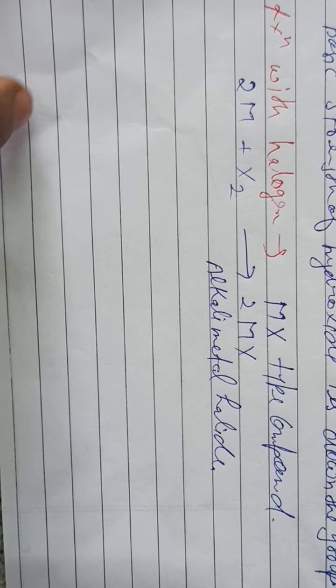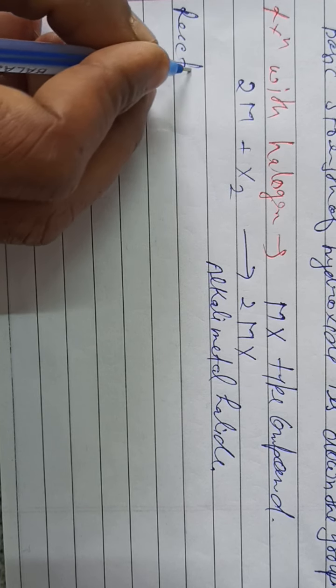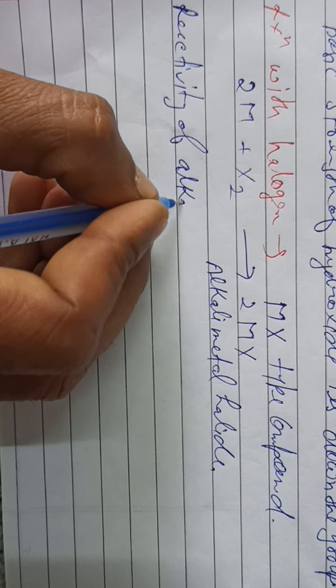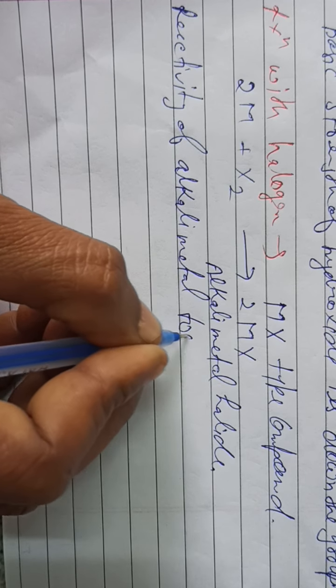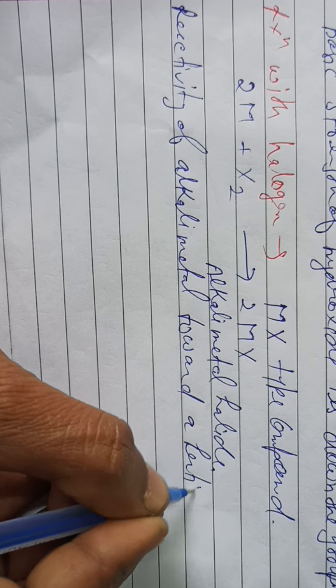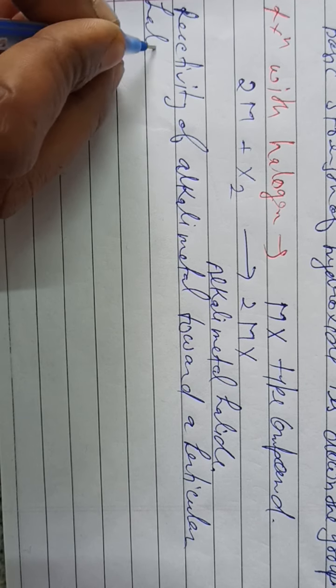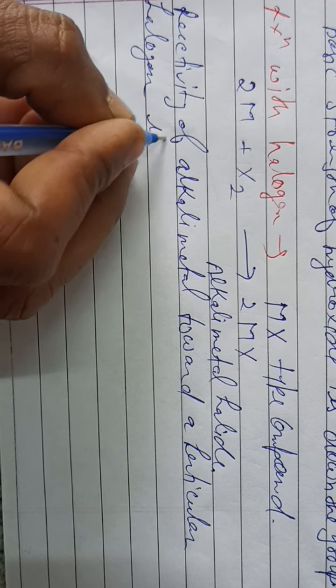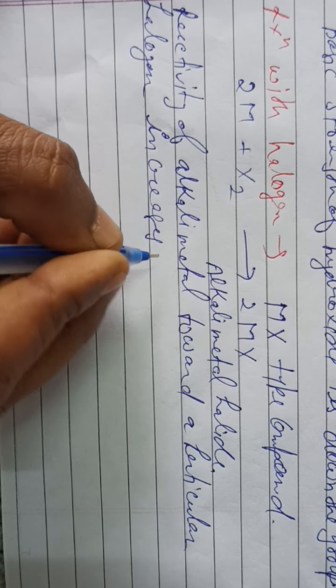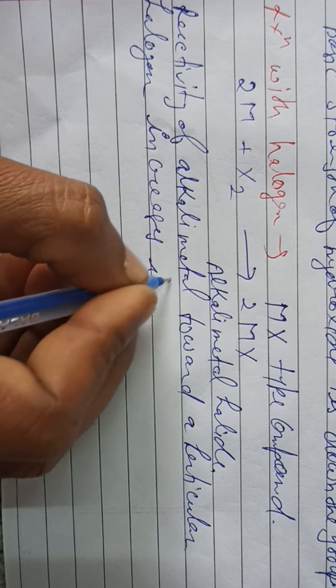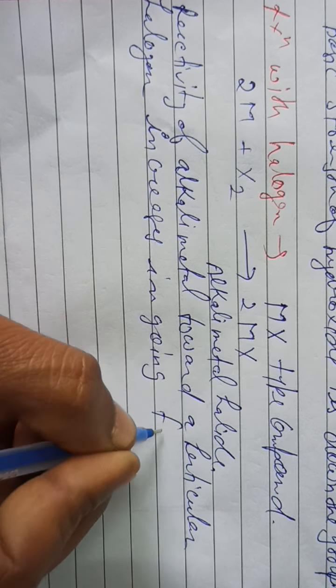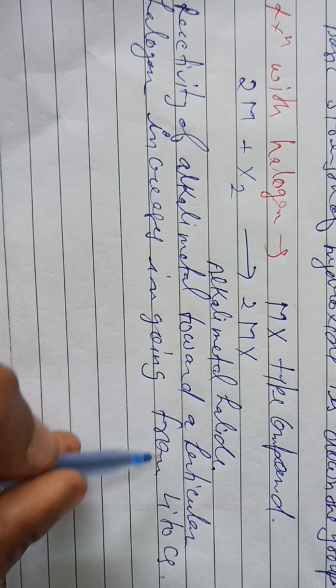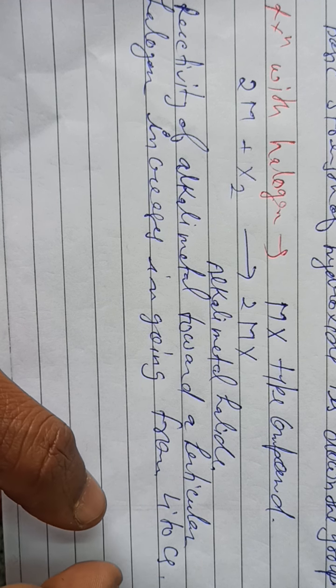And the reactivity of alkali metals toward a particular halogen increases in going from lithium to cesium. We can say here lithium to cesium means top to bottom.